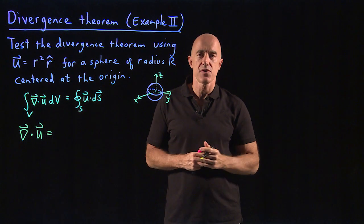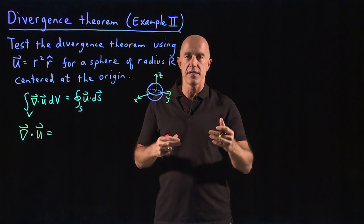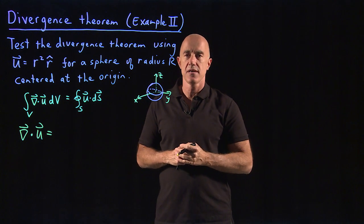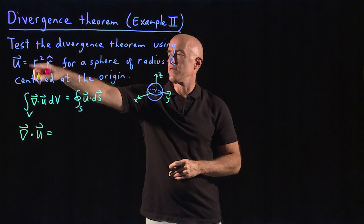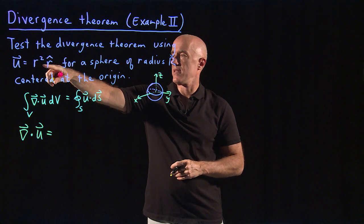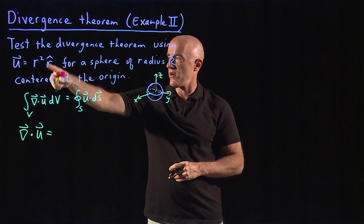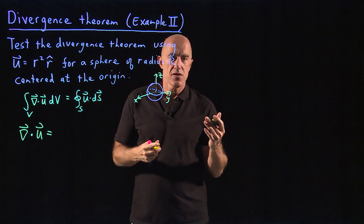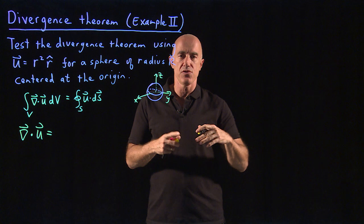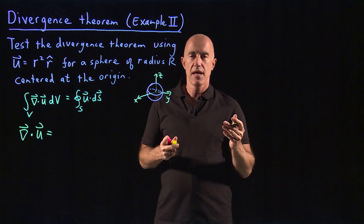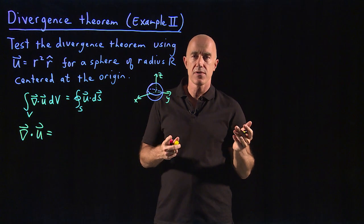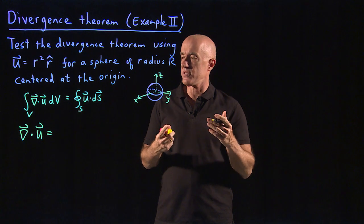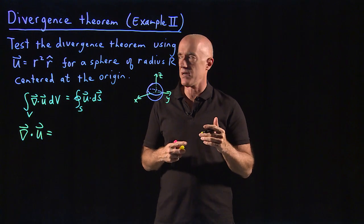Now is the time to use del dot u in spherical coordinates, because the vector field u is given in spherical coordinate variables. You don't have to remember it, but you should go back in the notes and look it up.